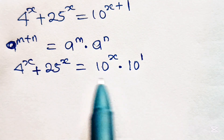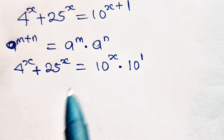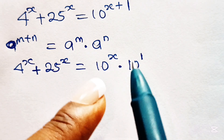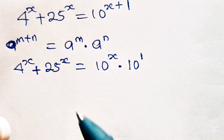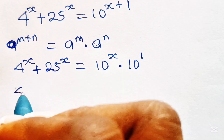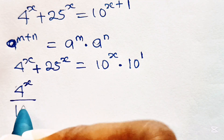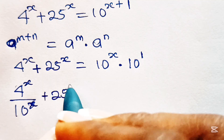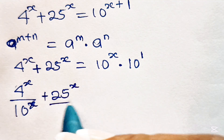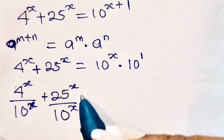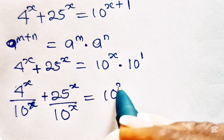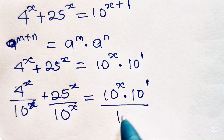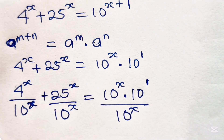Now, let's divide both sides of this equation by 10 to the power of x. That's where I'm bringing anything that has x to one side of the equation. So we have 4 to the power of x divided by 10 to the power of x, plus 25 to the power of x divided by 10 to the power of x, is equal to 10 to the power of x multiplied by 10 to the power of 1 divided by 10 to the power of x.